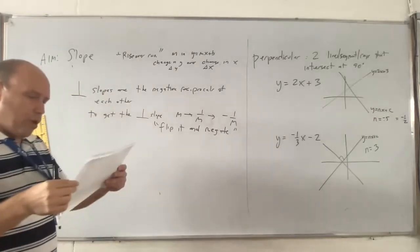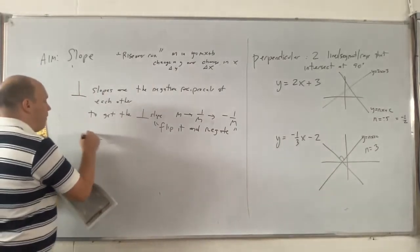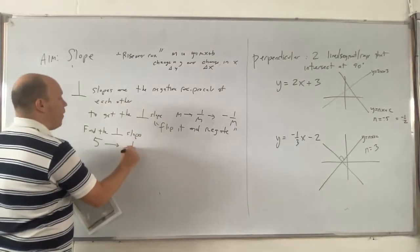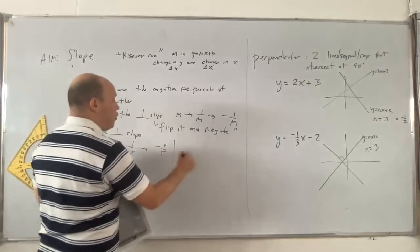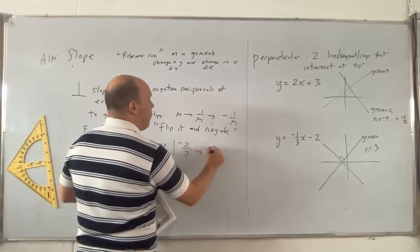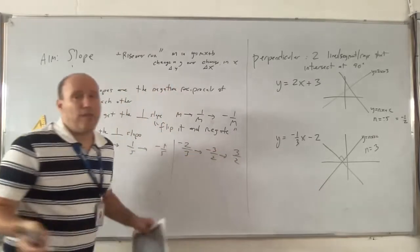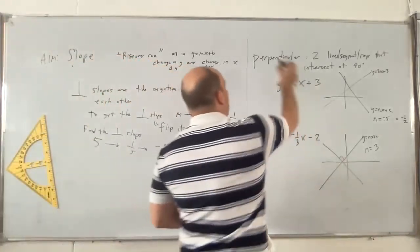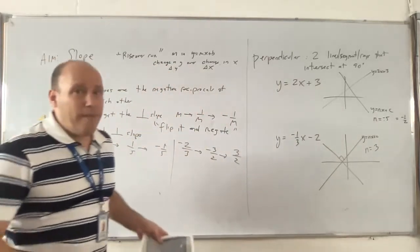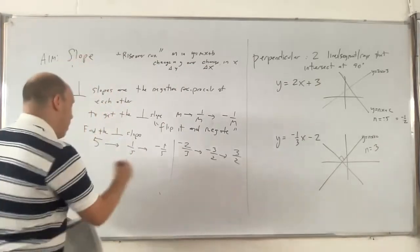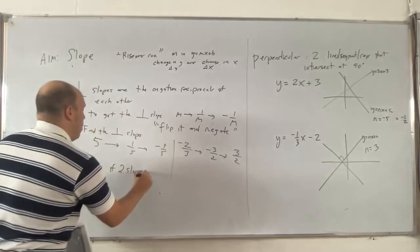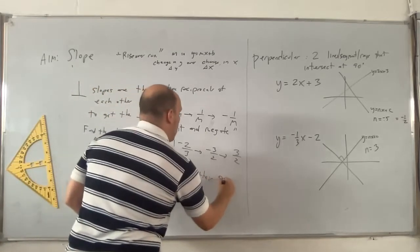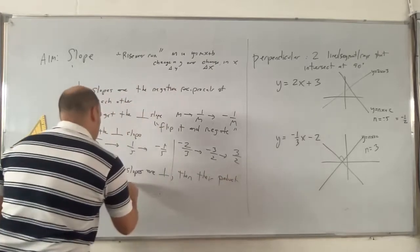Let's do some examples. If I have a slope of 5, the perpendicular slope is negative one-fifth. What about negative two-thirds? You flip it to get three-halves, then flip the sign to get negative three-halves — that's how you find the perpendicular slope. Also note: if two slopes are perpendicular, their product is negative 1.